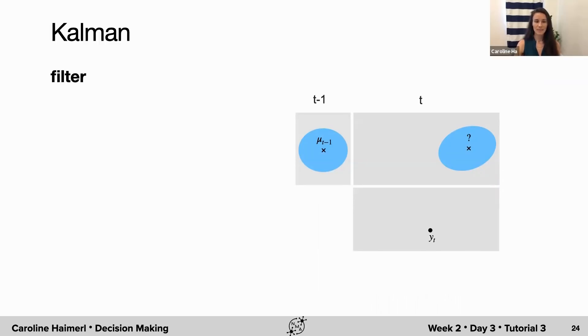In the linear dynamical system, we can do filtering one time step at a time. Let's take the example where we have some estimate of our latent distribution at time point t minus one, and we are getting a new data observation y at time point t. We now want to estimate the corresponding latent distribution at time point t, given what we know about the latent at the previous time point and about the data. We already know this would be again a Gaussian distribution, so we just need to find the mean and the covariance. We will do this in three Gaussian transformations.